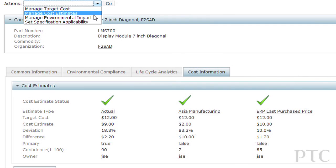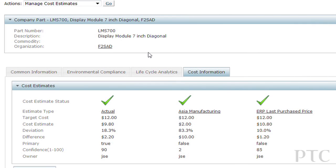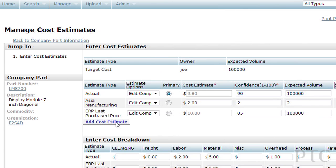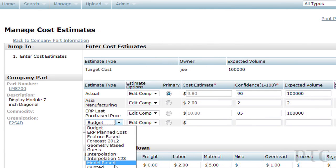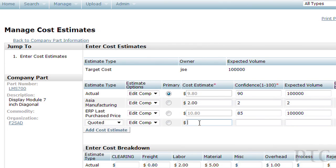Companies typically struggle in this area as the bill of material is constantly changing, parts are changing, suppliers are changing, and even the targets to measure against are changing. Not understanding how these types of changes impact cost targets and estimates can make design decisions relating to cost very difficult.